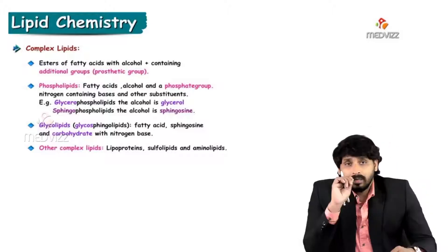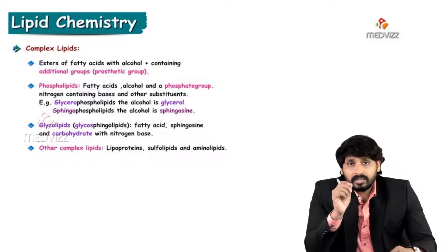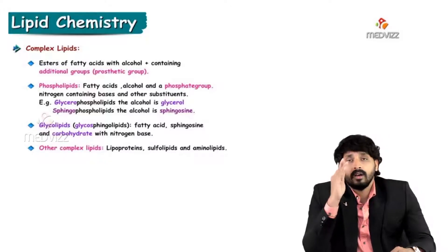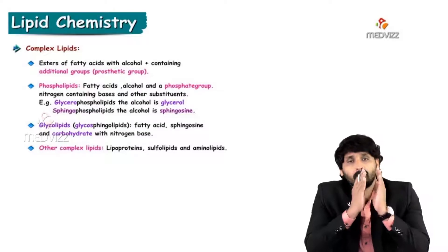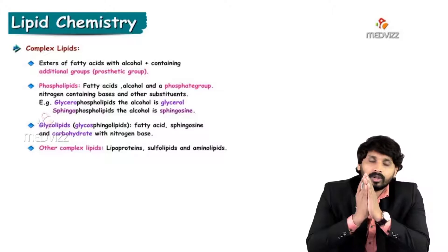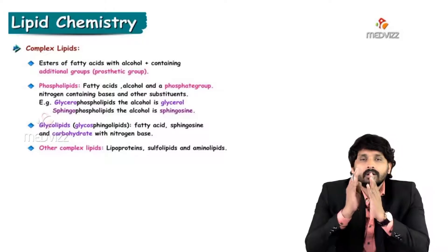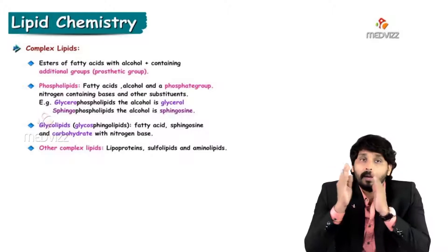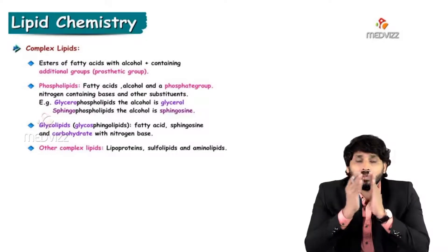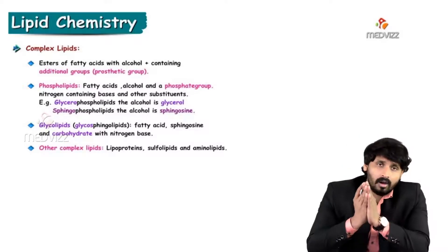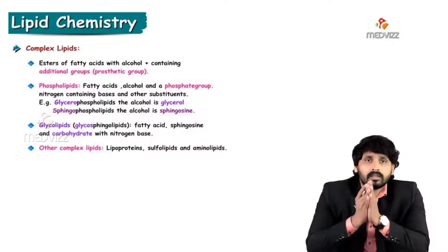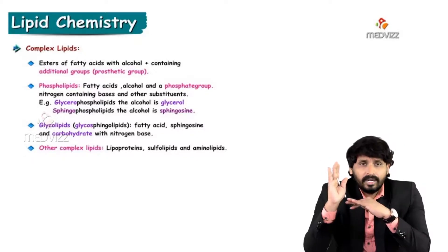Coming to complex lipids, as like esters of fatty acids with alcohol, they contain additional group - prosthetic group. So far in simple lipids, we have seen two parts: one is fatty acid, other one is alcohol, whether it is glycerol or high molecular weight, long chain alcohols. But in complex lipids, one part is additional: fatty acid, alcohol plus additional group, which is prosthetic group. So based on this third group, complex lipids, again, they classify.